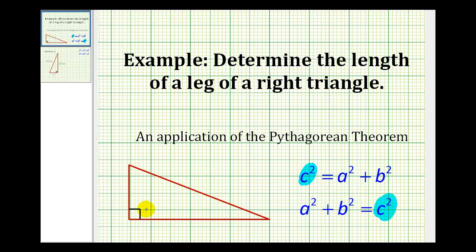The hypotenuse is the longest side of a right triangle and it's also opposite the right angle. So this would be the hypotenuse, and then a and b represent the length of the legs. It doesn't matter which leg is a and which leg is b.